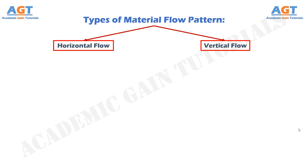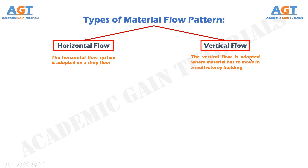The flow patterns can be classified into horizontal and vertical. The horizontal flow system is adopted on a shop floor, while vertical flow is adopted where material has to move in a multi-storey building. Let's discuss about horizontal flow lines or horizontal flow patterns.